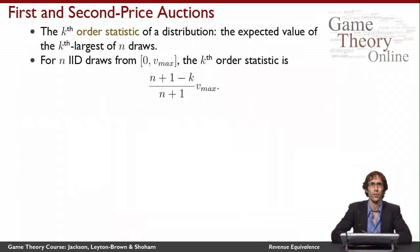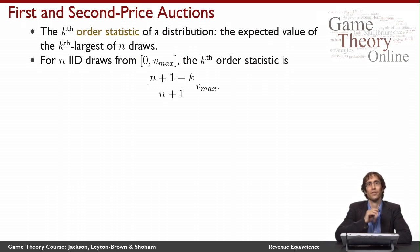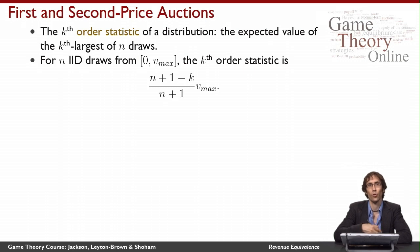Now let's see why the revenue equivalence theorem is useful for thinking about first and second price auctions. To do this, we need to think about a concept called the kth order statistic of a distribution. The kth order statistic is the expected value of the kth largest of n draws. Imagine that I was to independently draw five times from a distribution. What is the expected value of the biggest of those draws, or of the second biggest? Those are questions about the first and second order statistics of that distribution, for k equals 1 and 2, and for n equals 5.